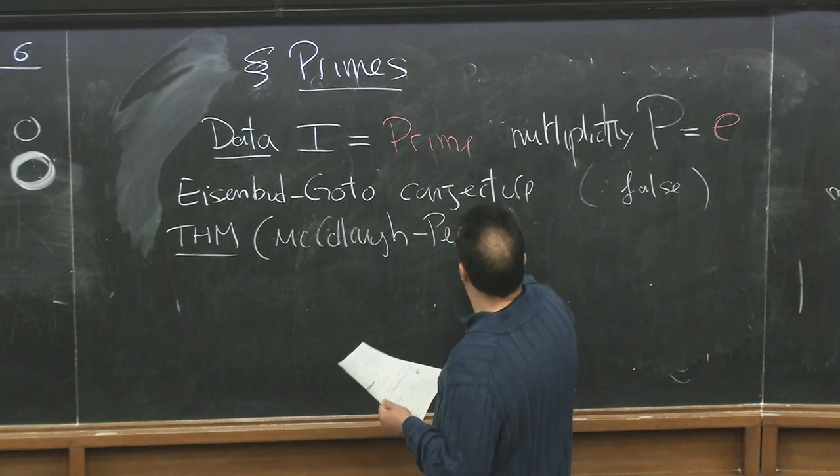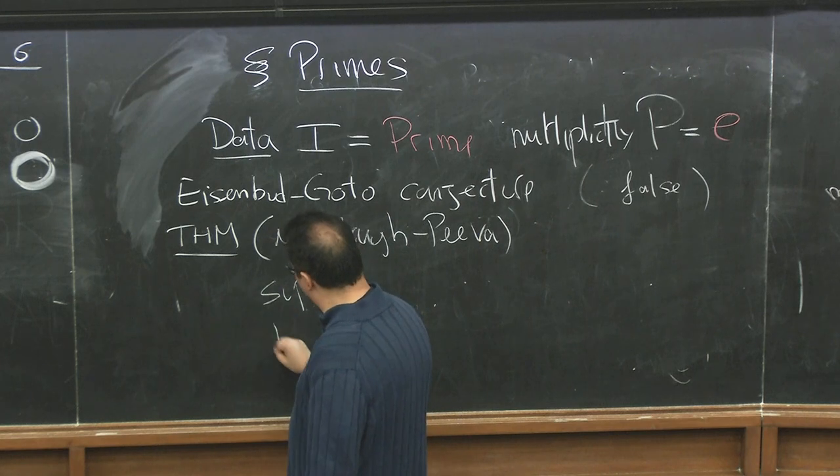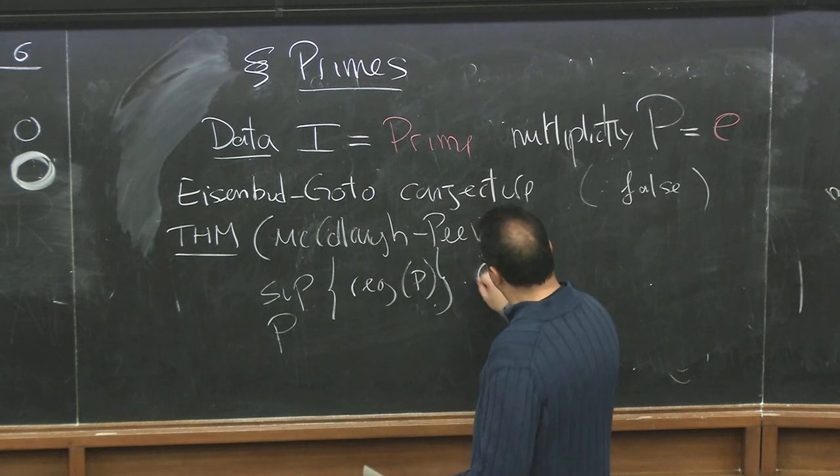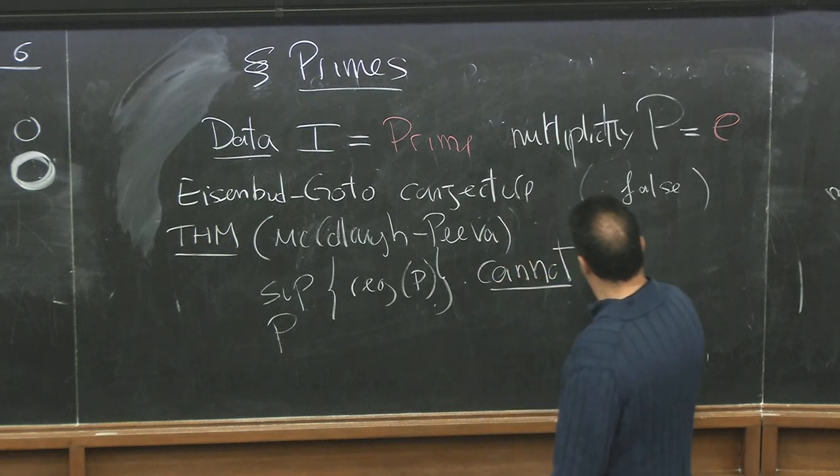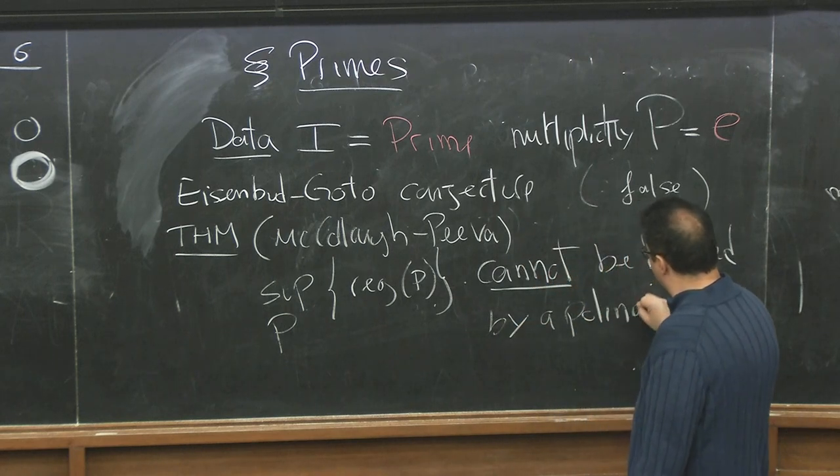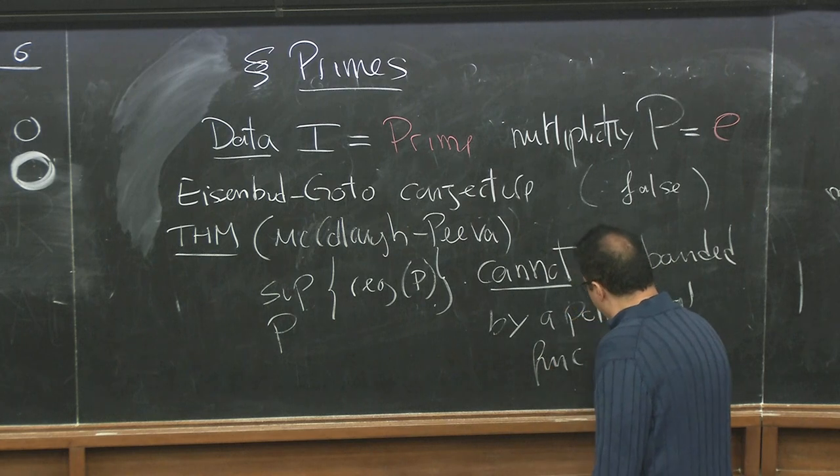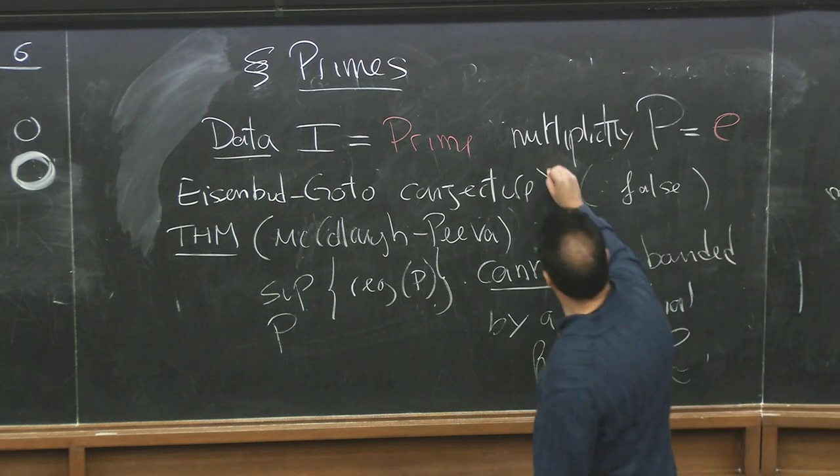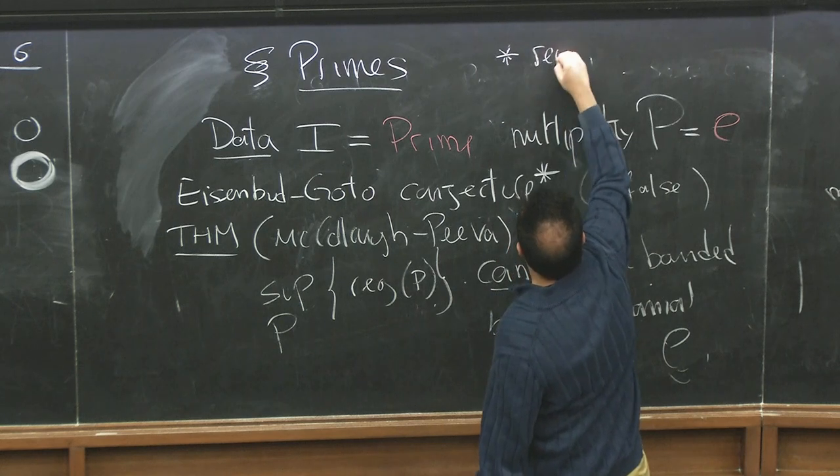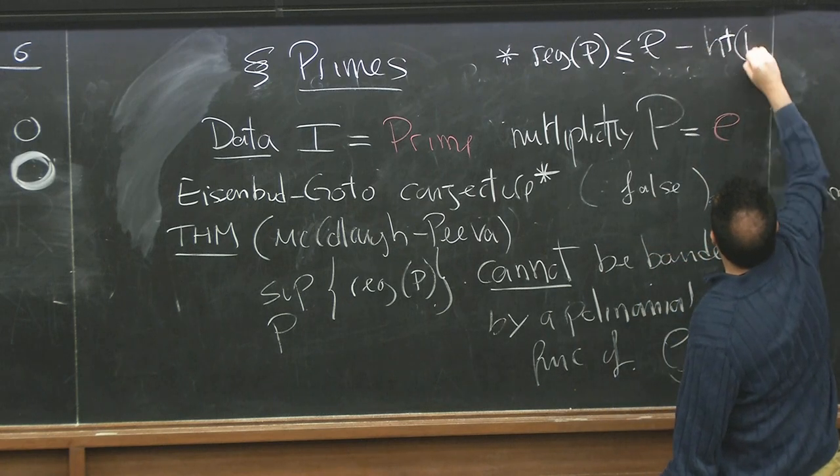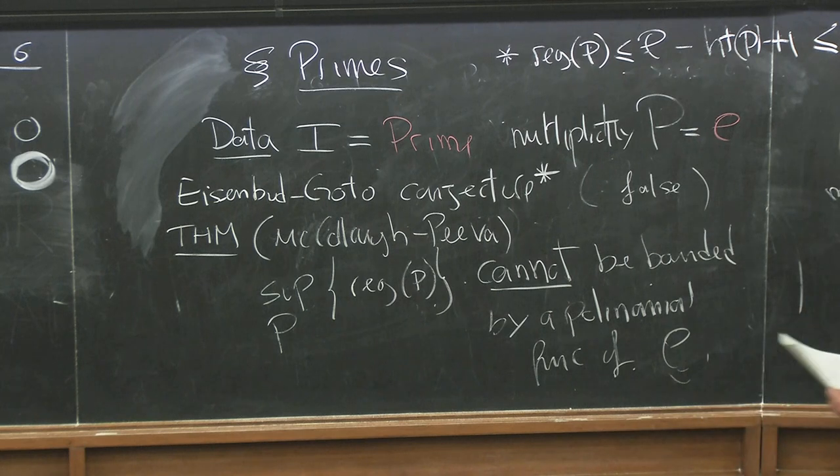because of the counterexample of McCullough-Peeva. Which basically says if I look at the supremum of all the possible P satisfying my data and I care for the regularity of P, this number cannot be bounded by a polynomial function of E. By the way, as in Goto conjecture, the prediction of the conjecture was that the regularity of the prime was bounded above by multiplicity minus height of the prime plus one. But in particular this is less than the multiplicity, so it would predict multiplicity as a bound for this type of thing.